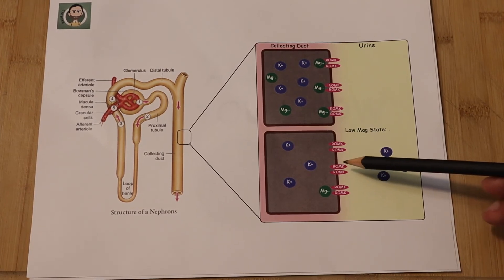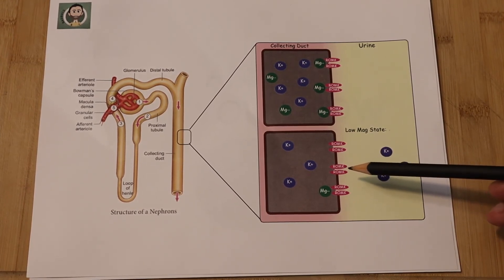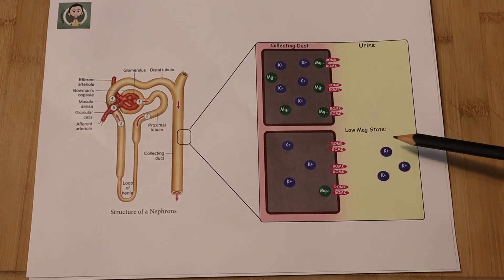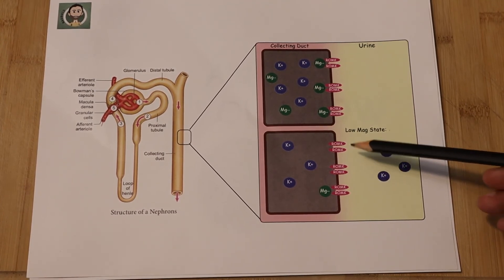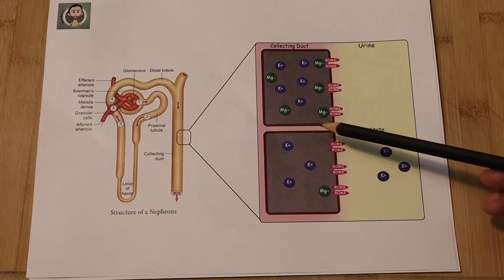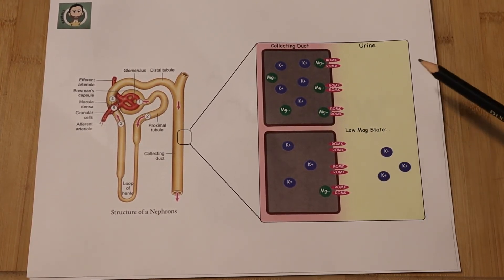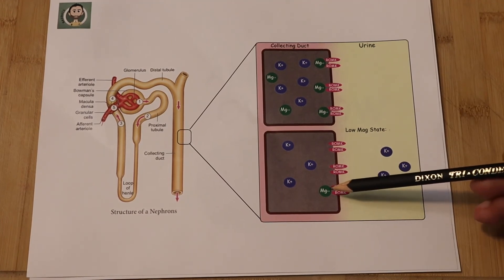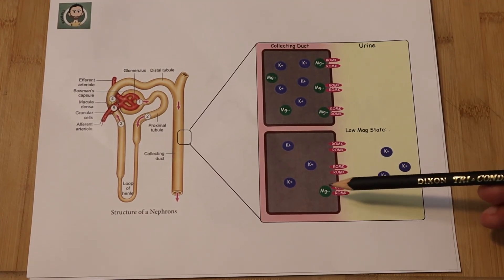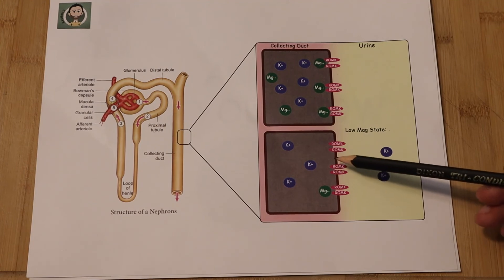Thanks to the heavy electrical gradient. So no matter how much you replete your potassium, your potassium will continuously be excreted out of your body into the urine until you check the magnesium level and you replete the magnesium and block these channels again.